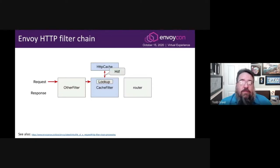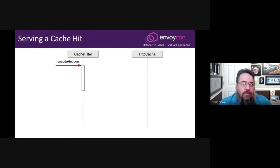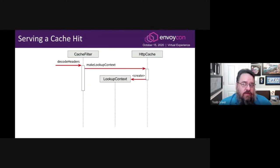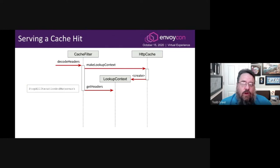When Envoy has parsed an HTTP request's headers, it calls the decode headers method of each filter. When it gets to cache filter, if it's a GET request, we look in the cache for a matching response. If one is found, we interrupt the normal filter iteration and return a response from cache filter. When the filter manager calls decode headers on cache filter, we ask HTTP cache for a lookup context. Lookup context is one of the interfaces implemented by the plugin provider. It represents the active lookup operation. We then kick off an asynchronous get headers request to find headers from a cached response. While this is happening, we return stop-all-iteration-and-watermark, a status code that tells Envoy to pause the current request. Otherwise, it would get sent upstream while we're busy checking the cache, which would cause a problem if we got a hit.